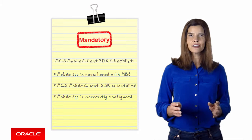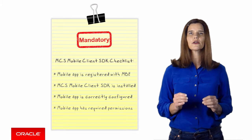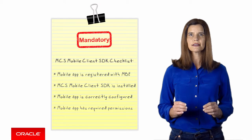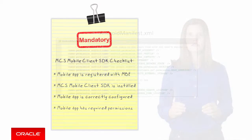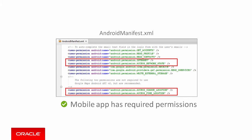Finally, make sure that the application has been given the required permissions. The application needs access to the internet, network state, and location information.